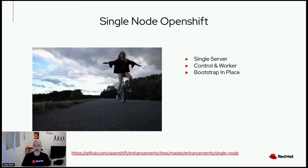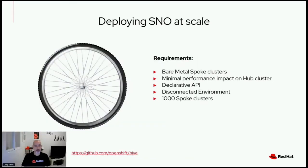So how do we deliver single node OpenShift to the edge, at large scale, with good performance? Our requirements: the topology will be hub-spoke, where the Hub is a cluster running the management application. We want the Spoke cluster installed on bare metal — for example, a server at the base of an antenna in a 5G far edge environment. We need minimal performance impact on the Hub, a declarative API like Kubernetes CRDs, GitOps-oriented deployments, disconnected environments with no internet access, and the ability to install a thousand Spoke clusters, import them to OCM, apply policies, and get status — all within an acceptable timeframe.